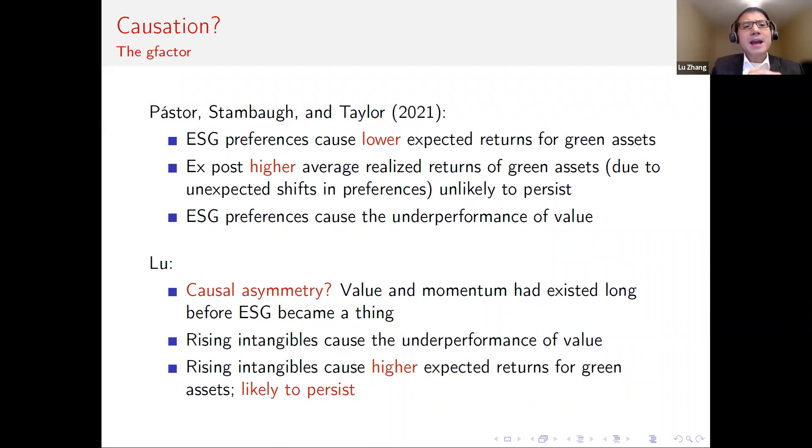So in the context of this paper, what is the causal structure behind the green factor? Rob and co-authors argue ESG preferences cause lower expected returns for green assets. In their theory, the green factor should earn negative risk premium. However, in the data, we observe a positive premium, every factor premium for the green minus brown factor. So what gives? Rob and co-authors attribute the difference between their theoretical prediction and the empirical data to unexpected shifts in preferences. And they conclude that the high positive factor premium observed so far for green assets are unlikely to persist going forward. And they also argue that the shifts in ESG preferences potentially cause the underperformance of the value premium.